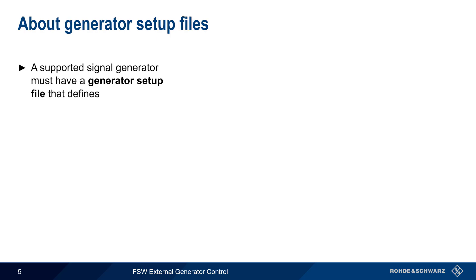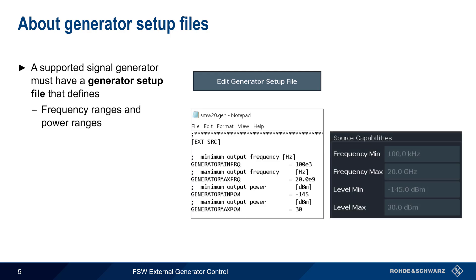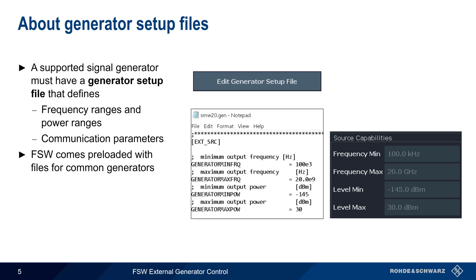Supported signal generators must have a generator setup file. This is a plain text file that can be viewed or edited by pressing Edit Generator Setup File. Generator setup files define both the frequency and power ranges supported by the generator, as well as communication parameters. The FSW comes preloaded with setup files for many common analog and vector signal generators, but setup files can also be created and/or modified to support other instruments.